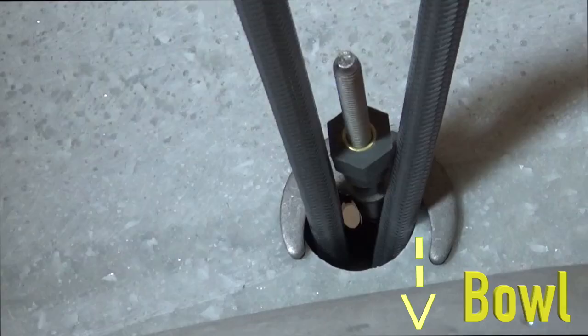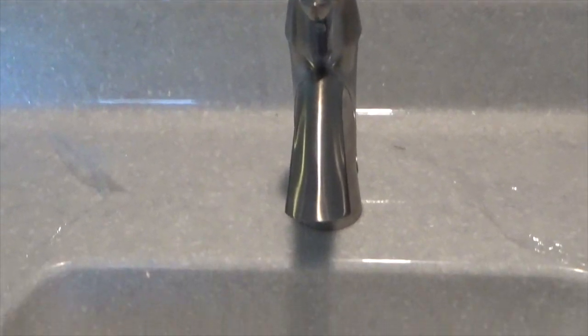Once secure, return to the top and begin flange and drain kit installation. Start by cleaning the drain opening in the bottom of the sink.